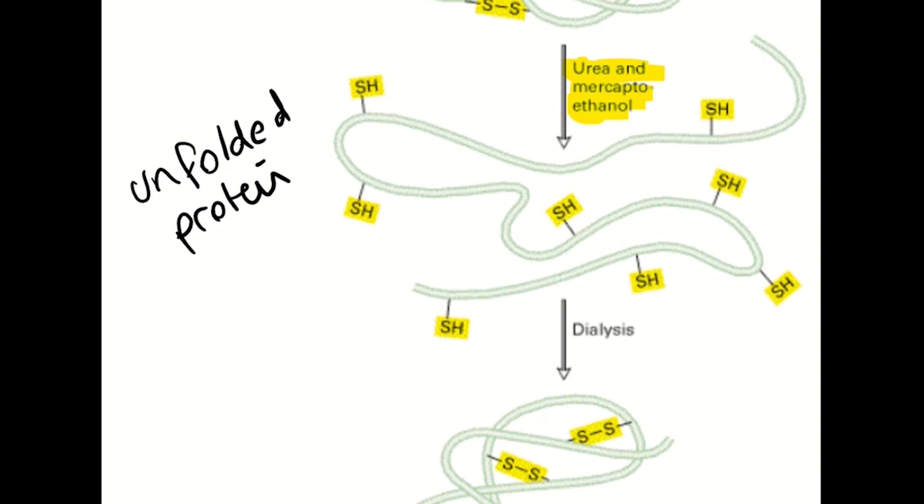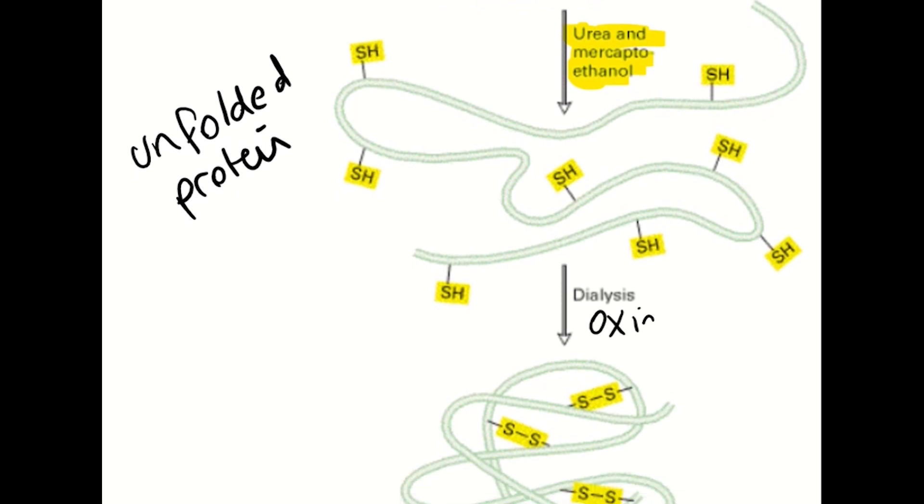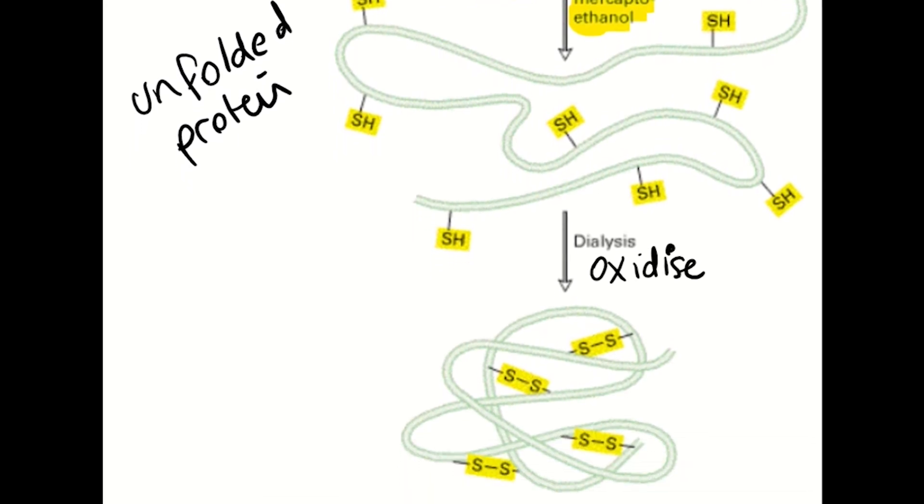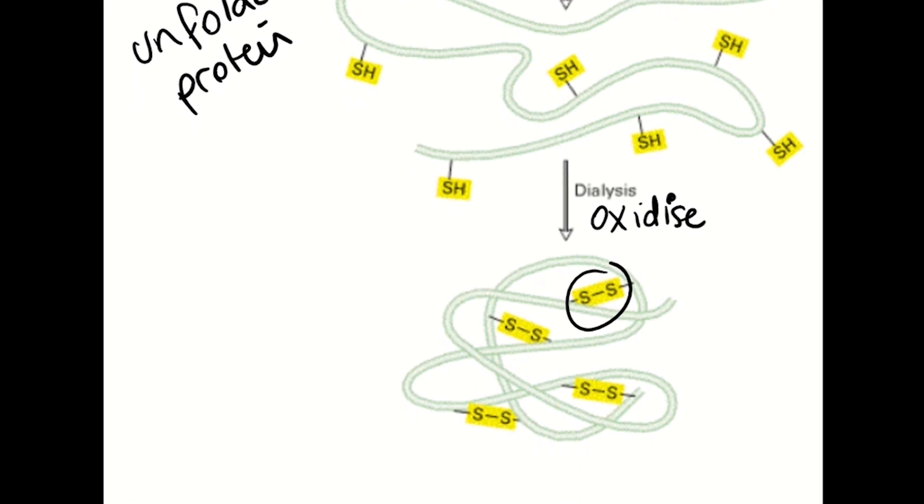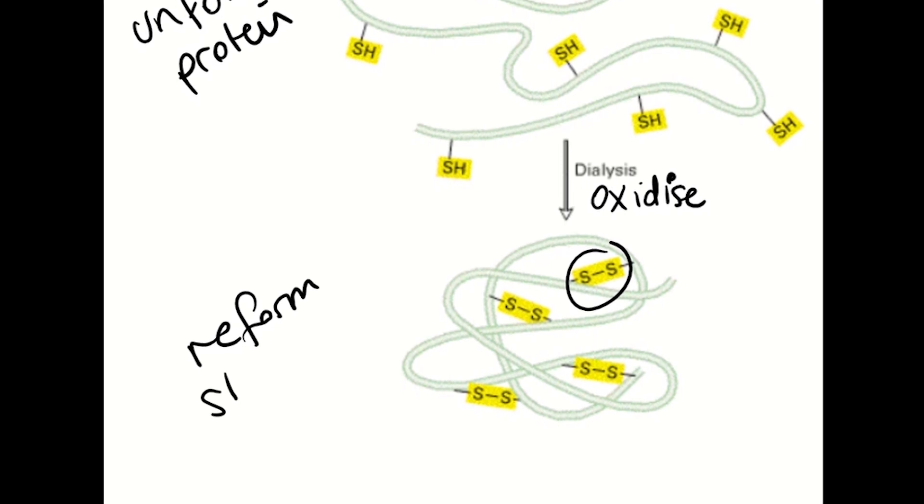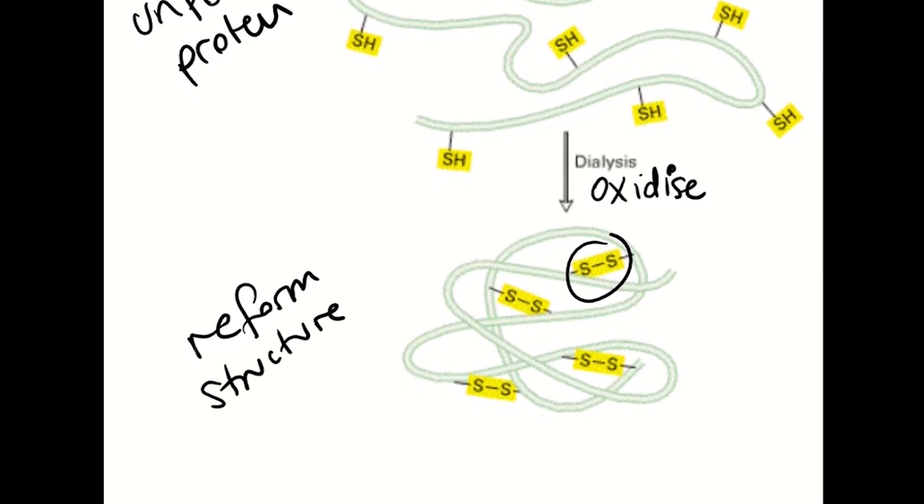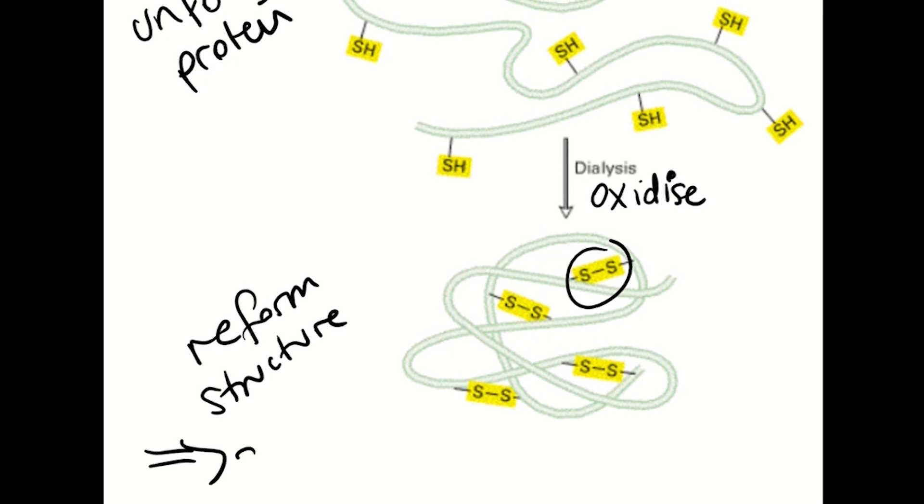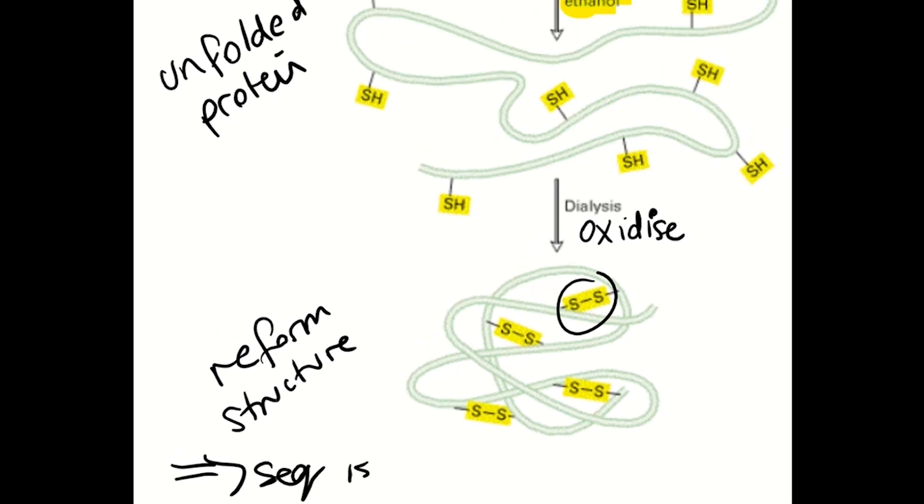By then removing this urea and re-oxidizing the solution, the protein structure was able to reform. As the conditions now enabled these disulfide bonds to reform, also allowing the structure to reform and restoring the activity of the ribonuclease.